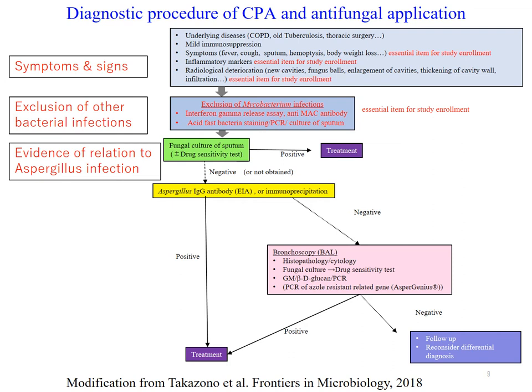This is our diagnostic procedure for chronic pulmonary aspergillosis in clinical practice. We see patients' symptoms and signs first. They usually have some underlying conditions like COPD, old TB, prior thoracic surgery, and may be mildly immunosuppressed. They have some symptoms like fever, coughing, sputum, and hemoptysis. We usually assess their inflammatory markers like CRP. An essential item is worsening of radiological findings.